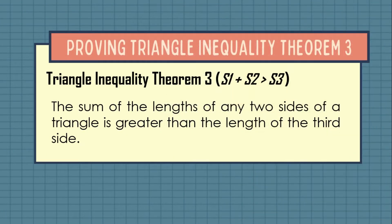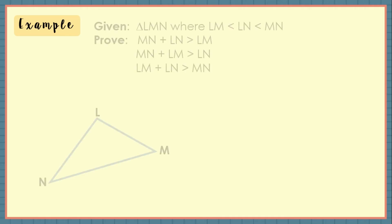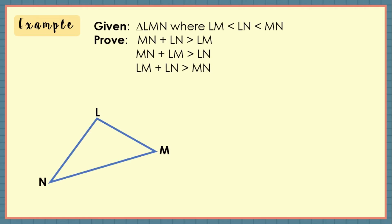Now it's time to have Triangle Inequality Theorem 3. This theorem states that the sum of the lengths of any two sides of a triangle is greater than the length of the third side. Let us have an example. Given triangle LMN where LM is less than LN and LN is less than MN, prove that MN plus LN is greater than LM, MN plus LM is greater than LN, and LM plus LN is greater than MN.